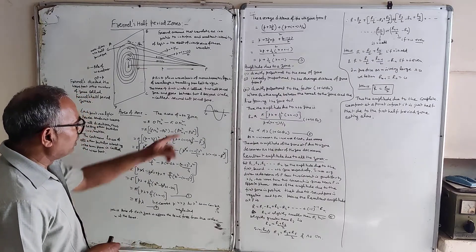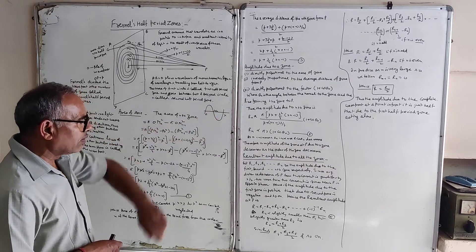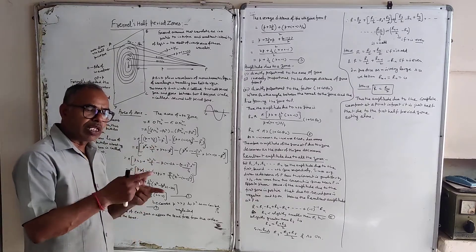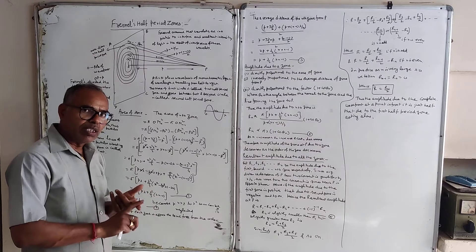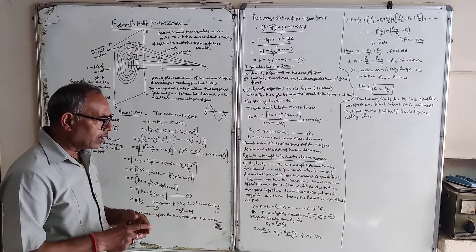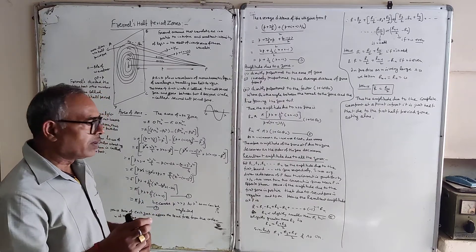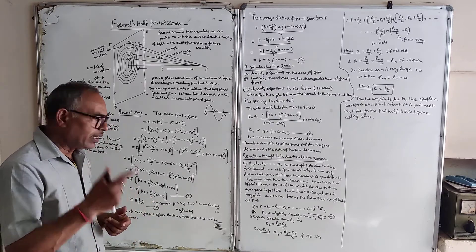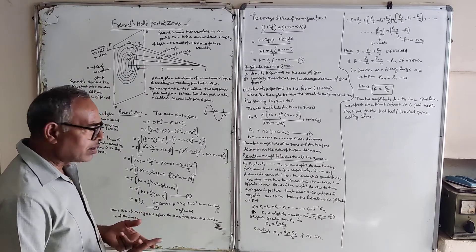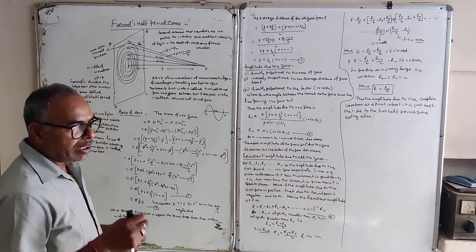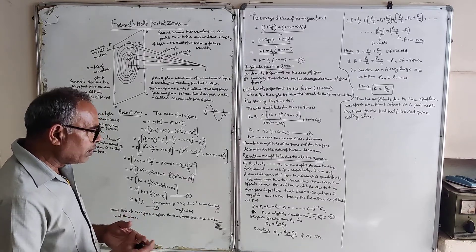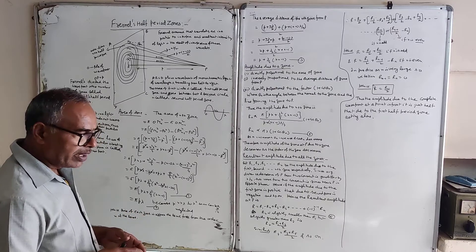If the amplitude due to the first zone is positive, then the resultant amplitude at P is R = r1 − r2 + r3 − r4 + ... Since consecutive zones have opposite phase, we approximate: r2 = (r1 + r3)/2, r4 = (r3 + r5)/2, and so on.